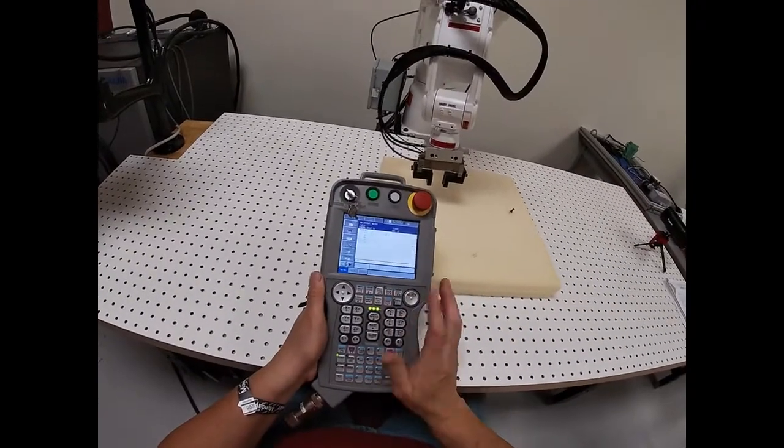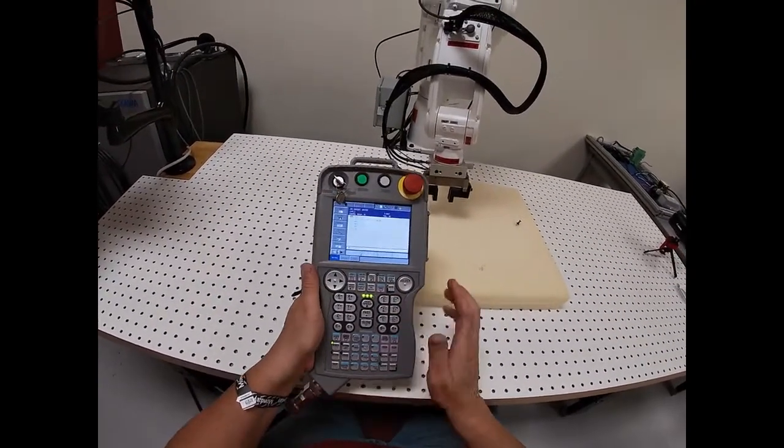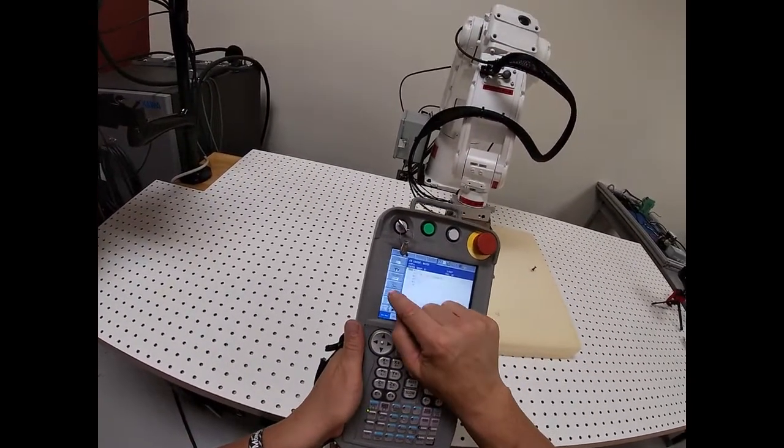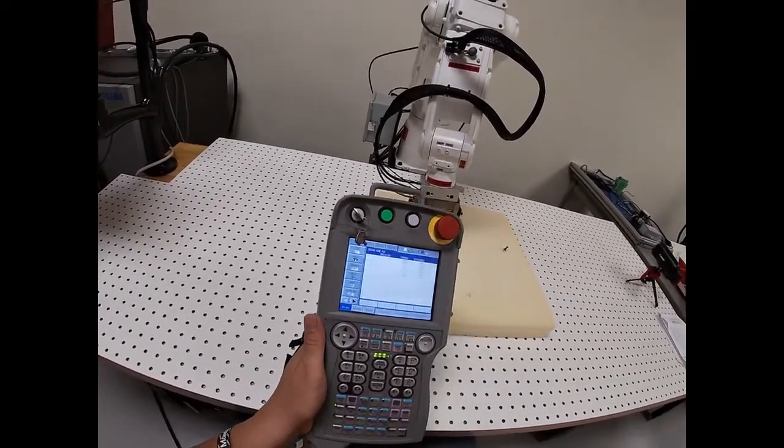So I make sure my servo on ready is lit. It's blinking now. I squeeze my trigger in the back of the teach pendant. Then I go to robot and then the main menu fills in under robot called second home position.